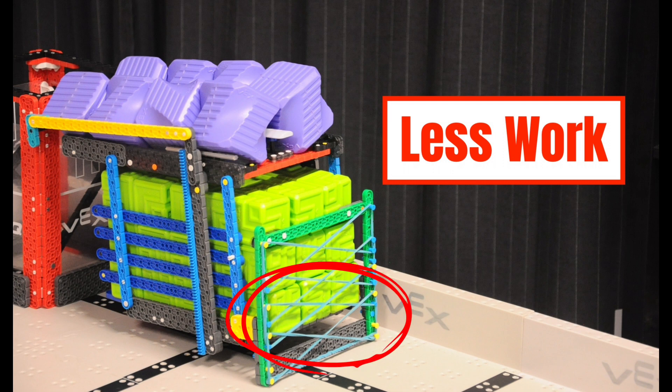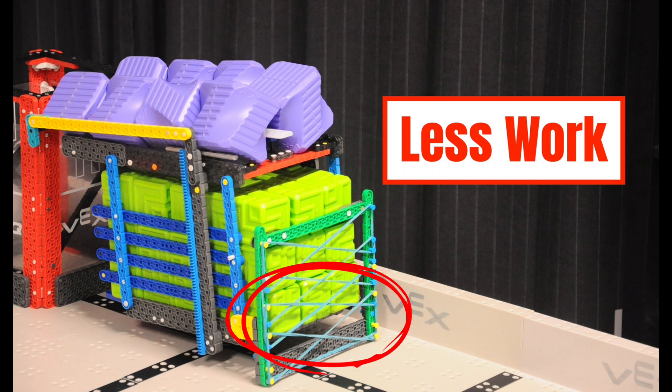We have three layers of green cubes. They will all travel the same height up. The bottom cubes will also climb over the 13-pitch wall, but then fall down again. This is a waste of work, right?